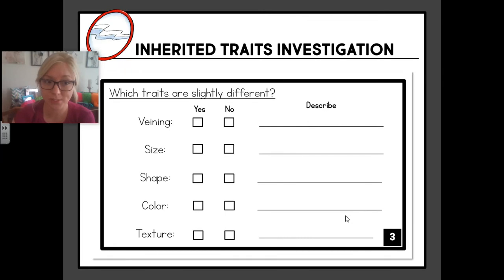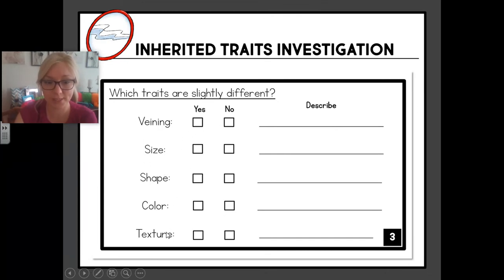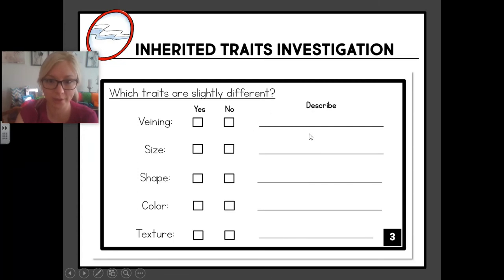Here's the page where I want to know what's different between leaf one and leaf two. It has all of the same categories: the veining, the size, the shape, the color, and the texture. Let me know if those traits are different from each other and go ahead and describe if you need to. Take a minute to pause the video to do nice neat work, and when you're finished you can go to the next page.